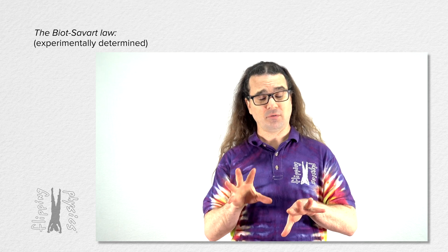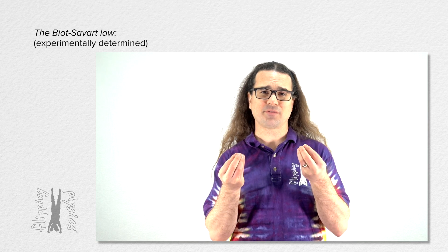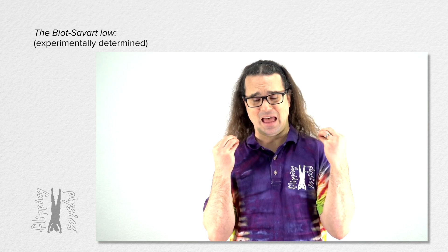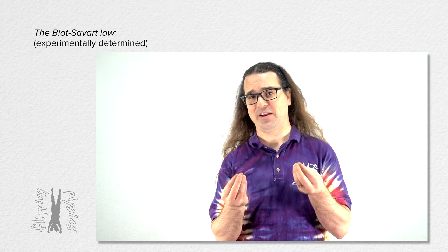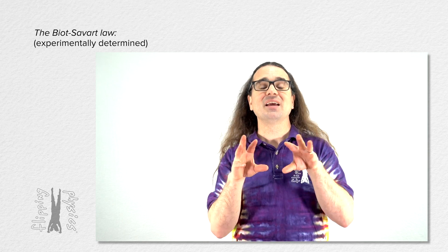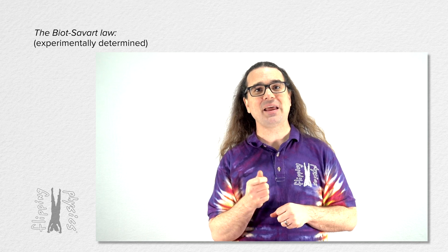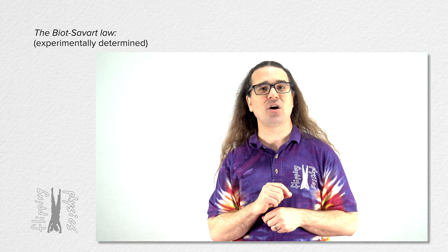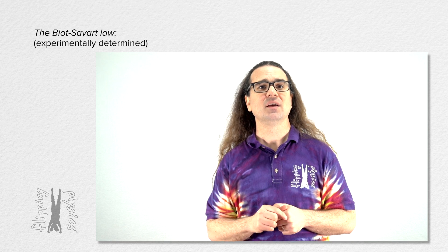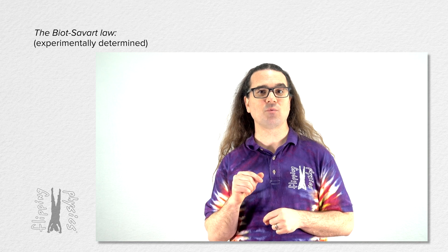The Biot-Savart Law — and these names are French, and I'm going to do my best to say them, but honestly I'm not that great at French pronunciation, and I'm sorry. The Biot-Savart Law gives the magnitude and direction of an infinitesimally small magnetic field dB caused by the current passing through an infinitesimally small portion of a wire.